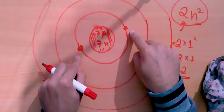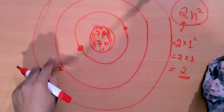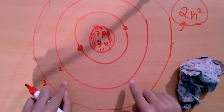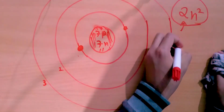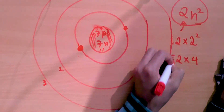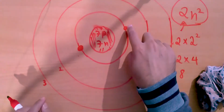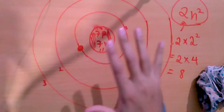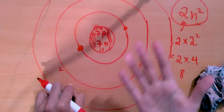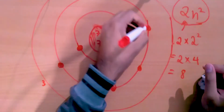I place the first and second electrons in the first orbit — it's now completely filled. I had seven electrons total, I've placed two, so I'm left with five. Now I move to the second orbit. For the second shell, n equals 2: two times two squared equals two times four, which is eight. So I can fit up to eight electrons in the second shell.